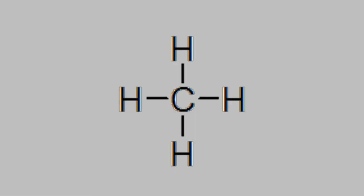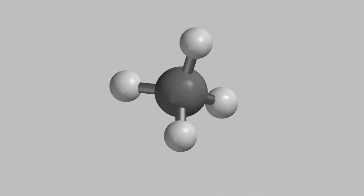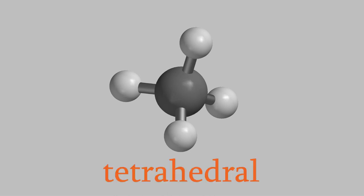Now let's look at methane, a molecule with four bonds. The Lewis structure looks like this will be a square molecule with a 90-degree angle between each pair of bonds, but that's not what we get at all. Instead, the shape we get looks like a pyramid with a triangular base. We say that the shape of this molecule is tetrahedral, and the reason we get this shape instead of a square is that the angle between the bonds in this molecule is 109.5 degrees, much larger than the 90 degrees we'd get in the square. In fact, 109.5 degrees is the largest angle between the bonds that we can get for four bonds, and that's why the molecule has this shape.